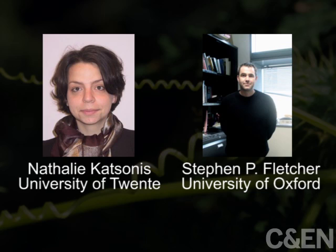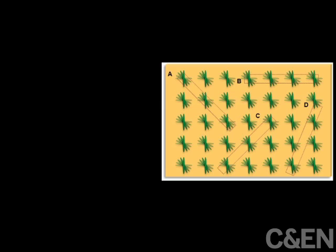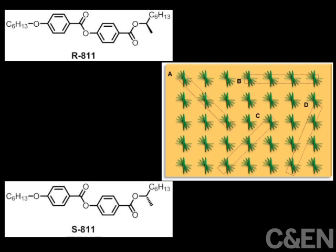Nathalie Katsonis from the University of Twente in the Netherlands and her lab teamed with Oxford University's Stephen Fletcher to produce these chemical tendrils. They're made from liquid crystals doped with a chiral molecule to give the material a left-handed or right-handed twist.